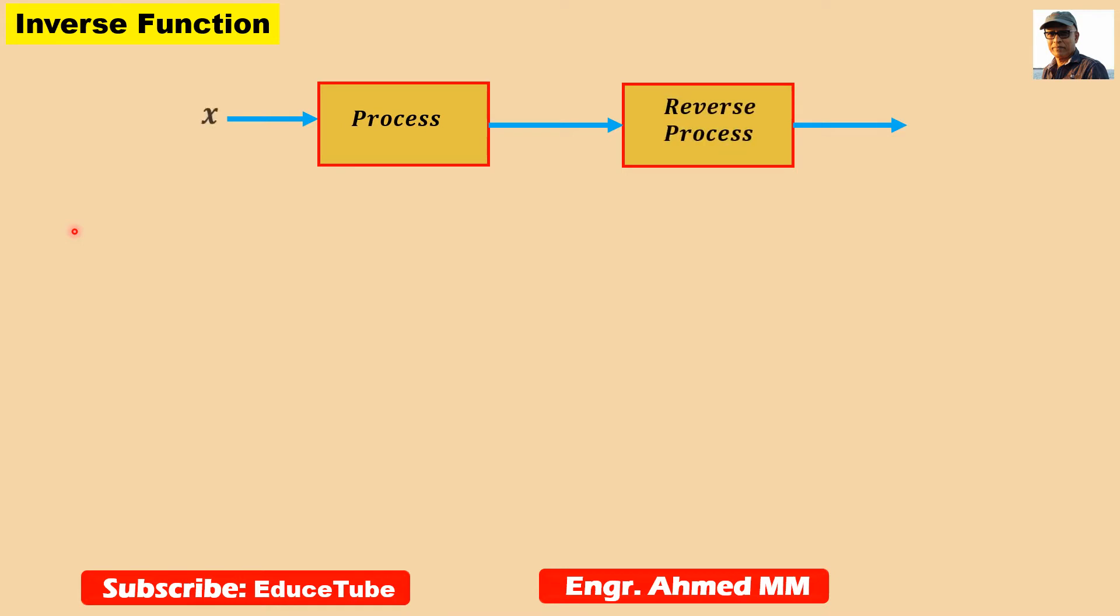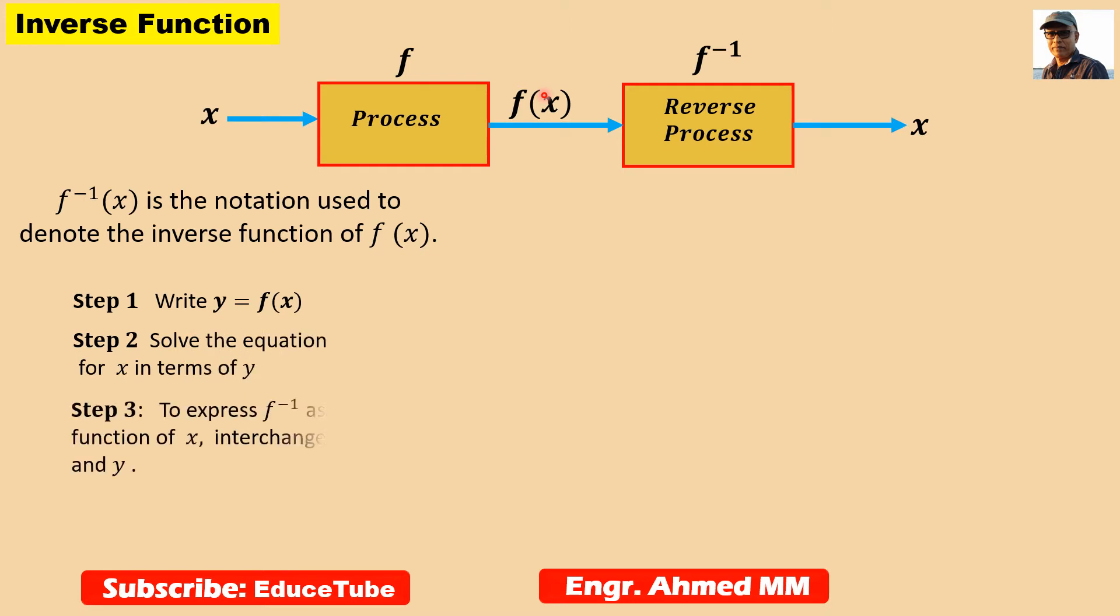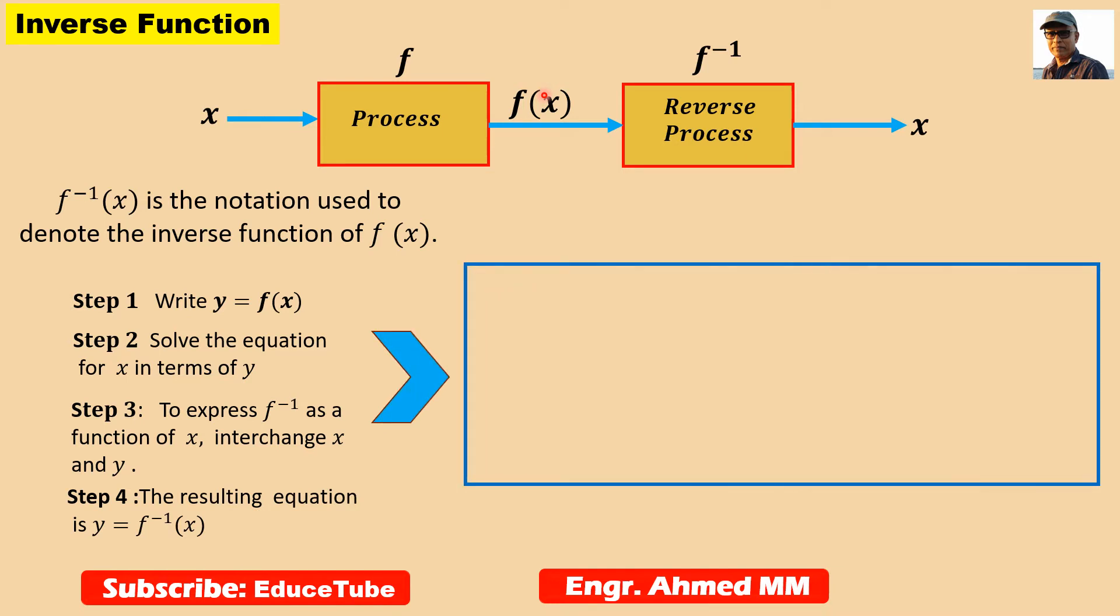A function as we know can be regarded as taking an input x, processing it in some way to produce a single output f of x. A natural question to ask is whether we can find a function that will reverse the process. In other words, can we find a function that will start with f of x and process it to produce x? It means reverse the process. So if we can find such a function, surely we can call it the inverse function of f of x.